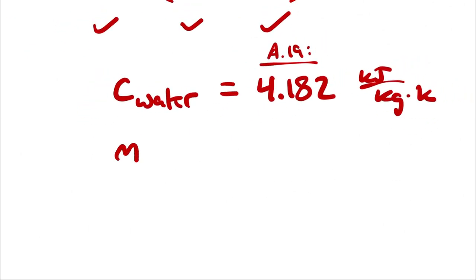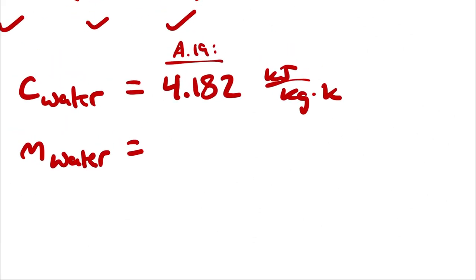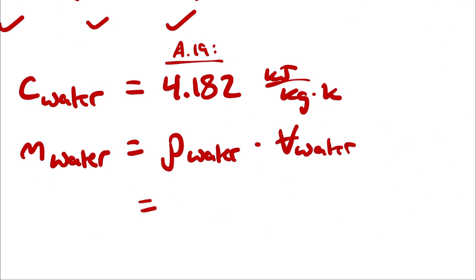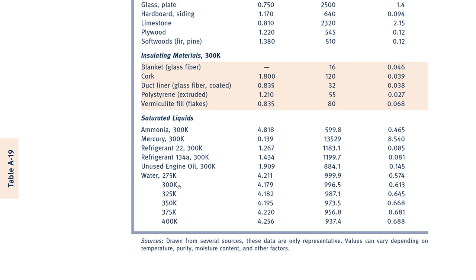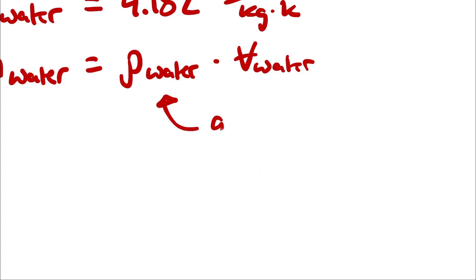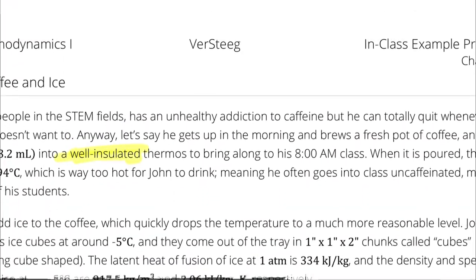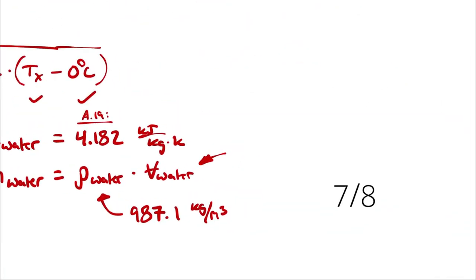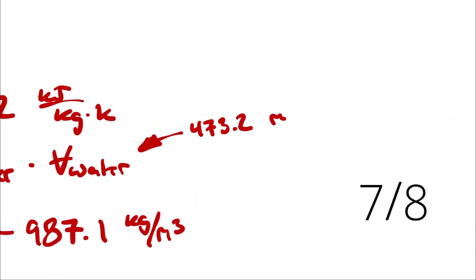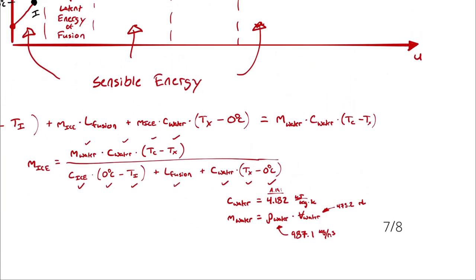The mass of coffee — mass of water — is calculated by taking the density of water times the volume of water. The density will also come from table A19; at 325 Kelvin, the density of a saturated liquid is 987.1 kilograms per cubic meter. The volume of water was given as 16 ounces, which is 473.2 milliliters. At this point I have everything I need to compute an answer.